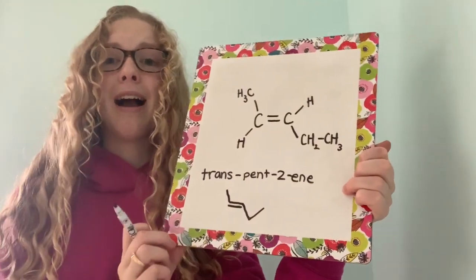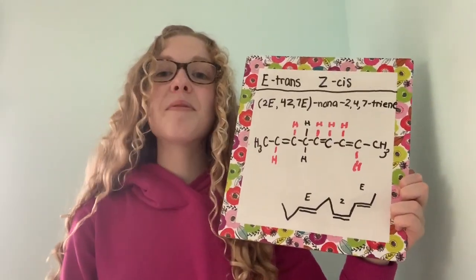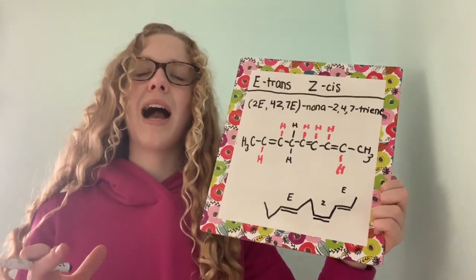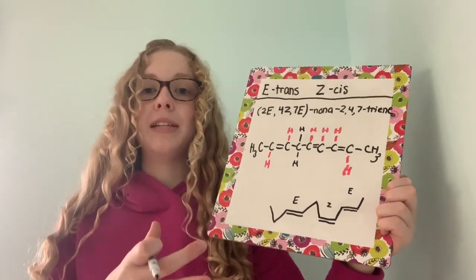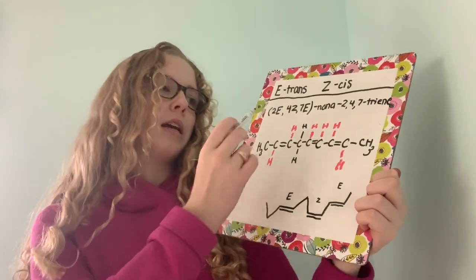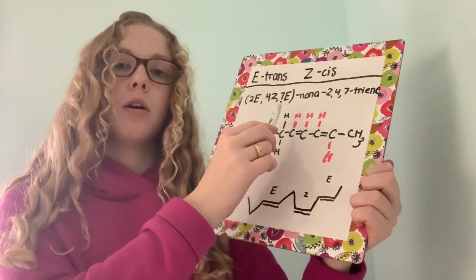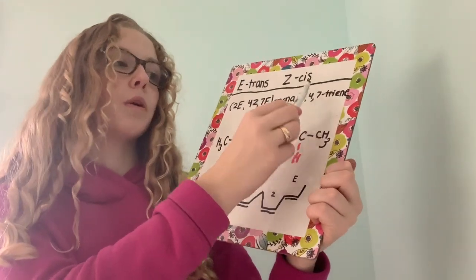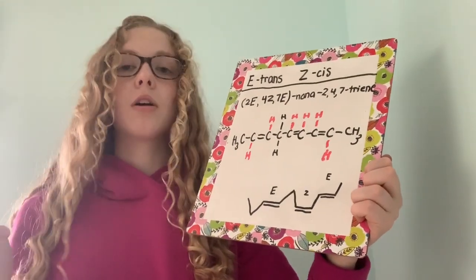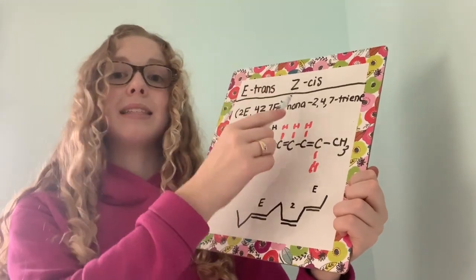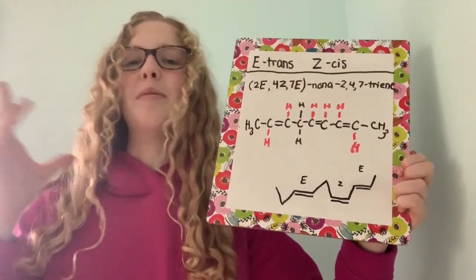And down here is just the line diagram for if you're interested. Now let's move on to EZ naming, which is when you have more than one double bond in a particular compound — you'll use this notation. It looks a little odd, but they all correspond. As you can see, it's 2, 4, 7 — they're talking about the same thing. E means trans, Z means cis. That's very important to note, otherwise it'll be very confusing.